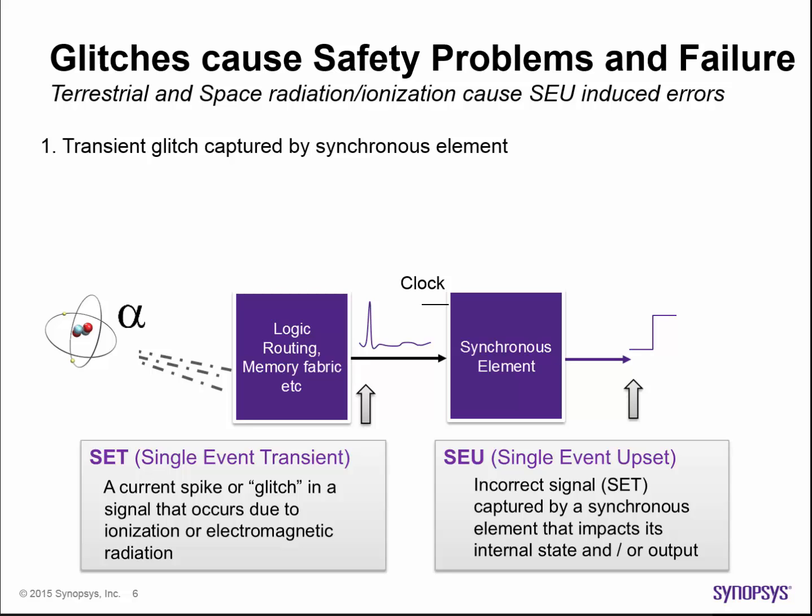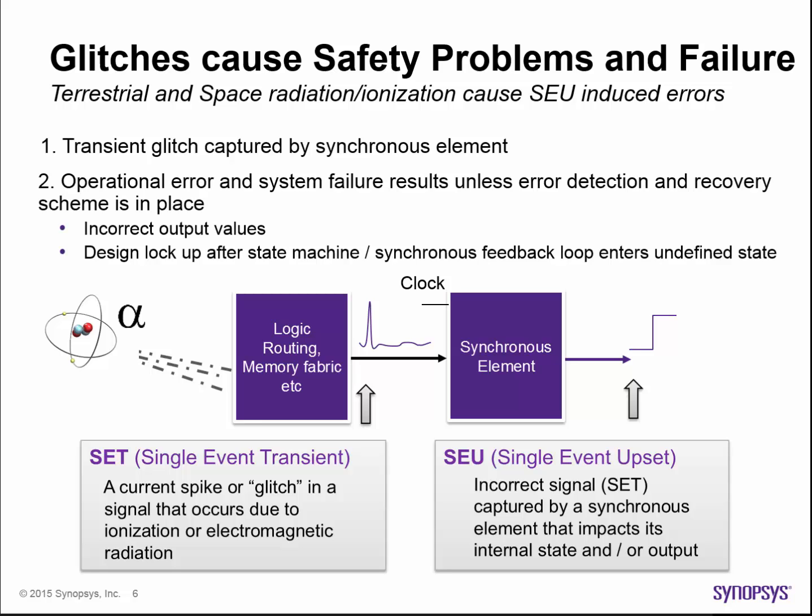This act of capturing an incorrect value is known as a single event upset, or SEU. The error is now in effect retained by the circuit and can be propagated across other parts of the system, potentially causing all sorts of trouble, especially in circuits with synchronous feedback. As we'll see later, if an error propagates inside a state machine — that is, an FSM — it could cause an undefined state to be reached and complete lockup of the operation of any circuitry that the FSM controls.